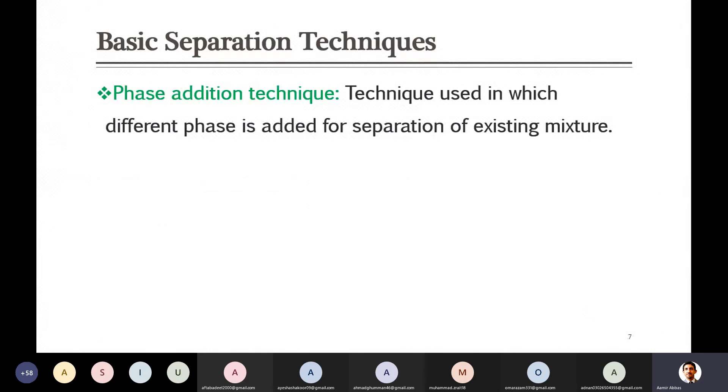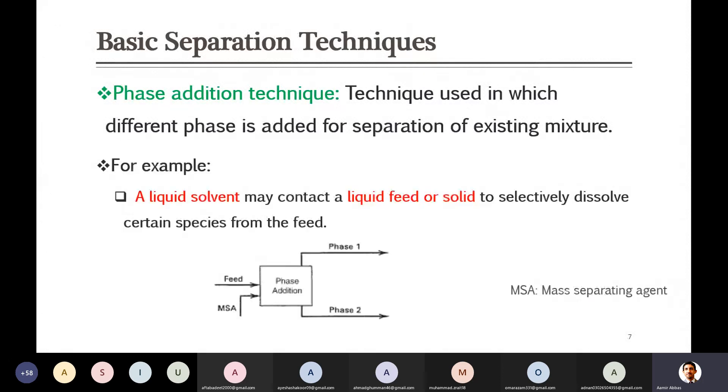The next technique which is generally categorized is the phase addition technique. As its name is also indicating, what you will be doing - you will be adding a new phase to the system. In this technique, we add a different phase to the separation of already existing mixture. For example, it is a mixture of two liquids and we want to separate them, so we can introduce a new liquid in that case that can get them separated, or maybe we can even sometime use some vapor stream or gaseous stream. For example, you have a gaseous mixture - in that case, in order to separate the gases, we can introduce some of the liquids so that it can absorb some gases from that mixture.